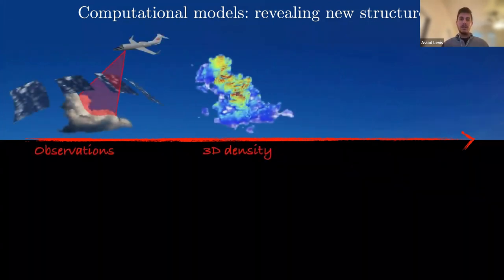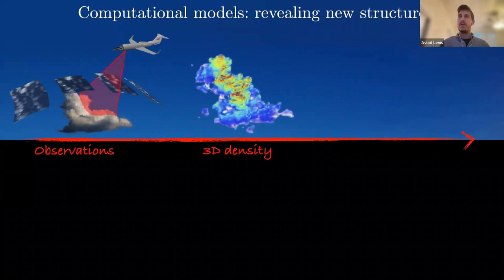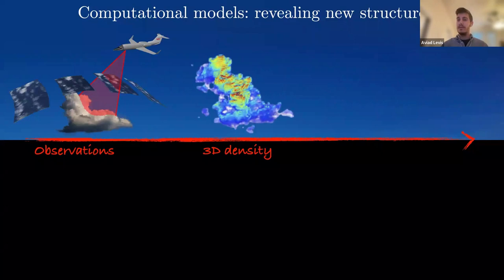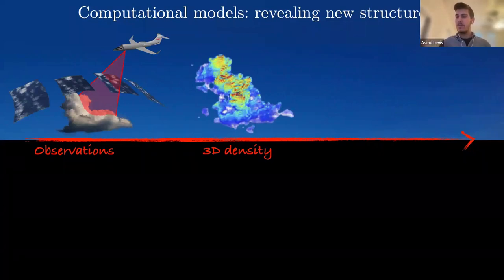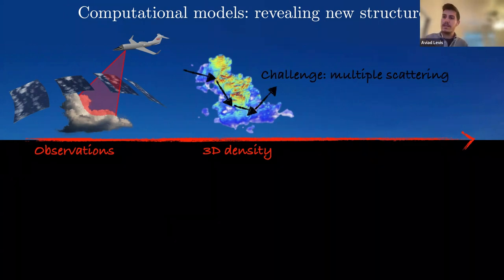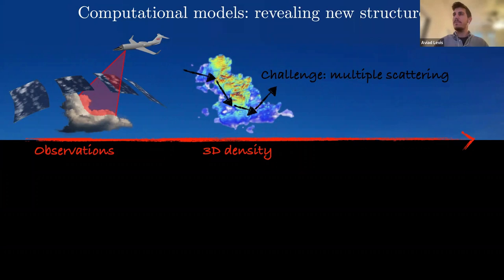In the case of clouds, we took observations from JPL's high altitude aircraft with multi-view observations and wanted to take these seemingly unstructured observations and produce some structure — in this case, the 3D densities of clouds. The main challenge was that when you're looking into clouds, you're not seeing illumination scattered once or twice; you're seeing solar illumination scattered multiple times. This is challenging computationally because you can think of it as a recursion that you have to work out.